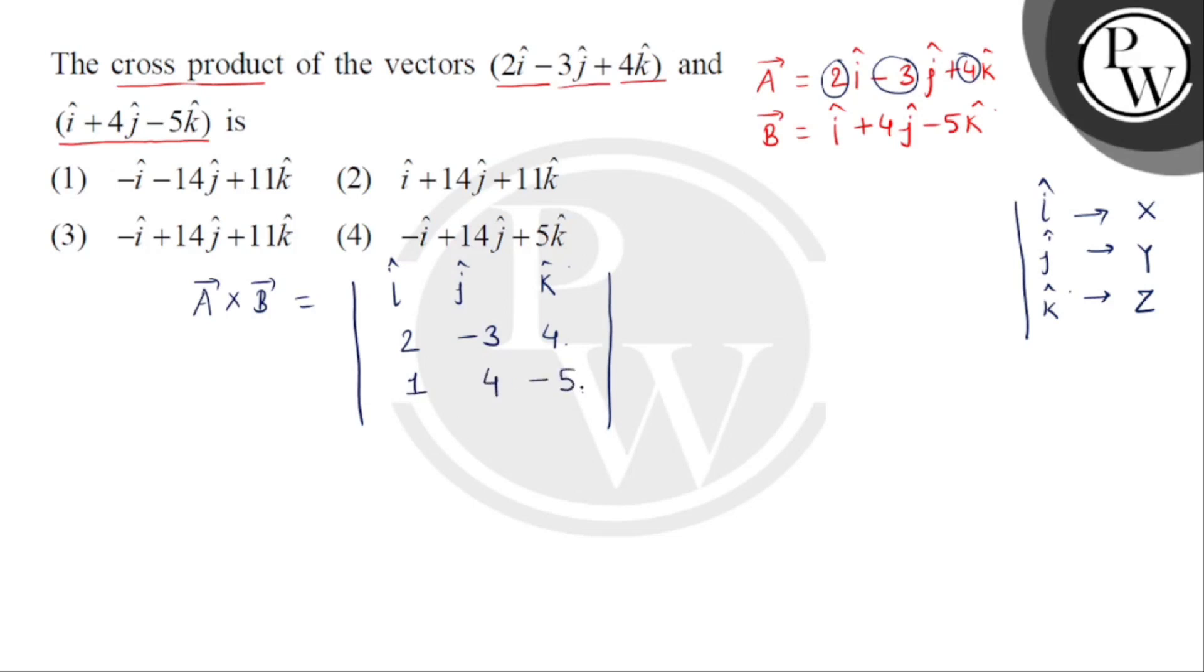4 and minus 5. अब यहां से सबसे पहली row में से हम i cap ले लेंगे and cross multiplication से हमें मिलता है, यह दोनों का product 15. Then minus, यह दोनों का product आगया 16.